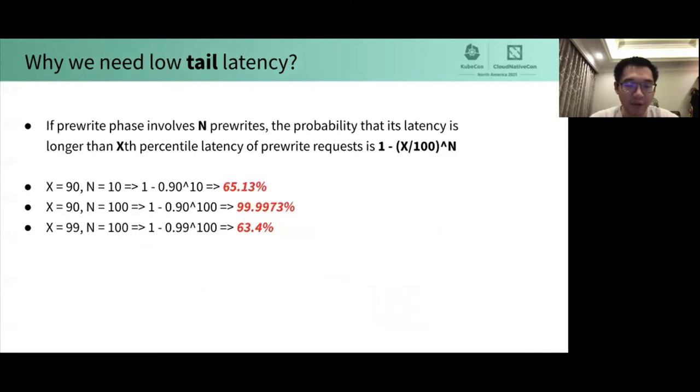If the pre-write phase involves n pre-writes, the probability that its latency is longer than x percentile latency of pre-write phase is 1 minus x percent to n's power. X percent represents the probability that the latency of the request is shorter than the x percentile latency, and each request is an independent event. So x percent to n's power means the probability that n requests latency are all shorter than the x percentile latency. Therefore, the probability of its complementary events is what we want.